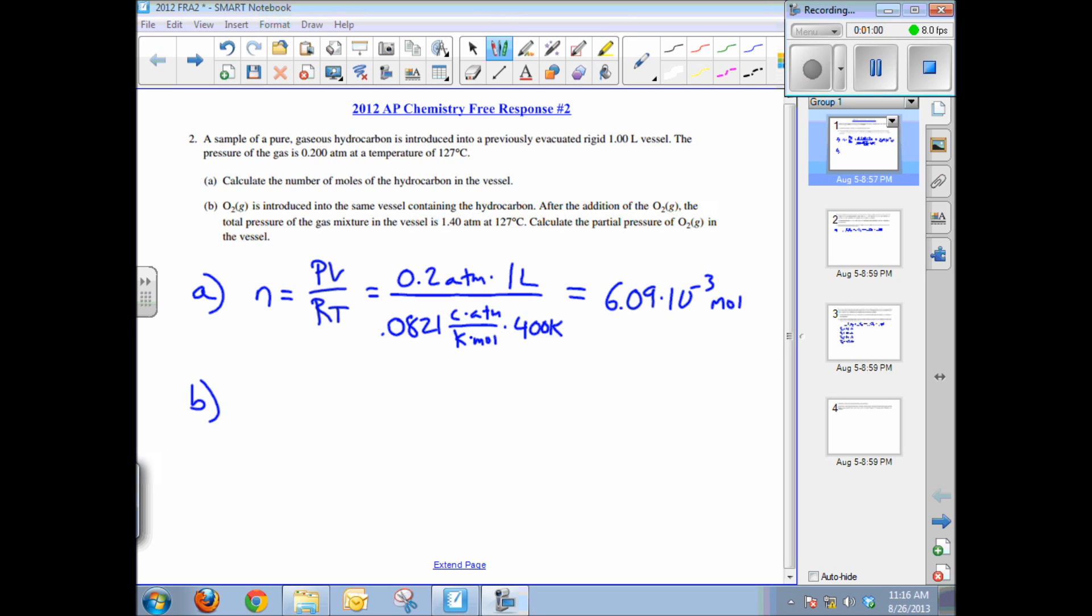Part B is essentially Dalton's law of partial pressures. Some oxygen is introduced into the vessel containing hydrocarbon. After the addition of the oxygen, the total pressure of the gas mixture is 1.4 atmospheres at the same temperature. What's the partial pressure of oxygen?